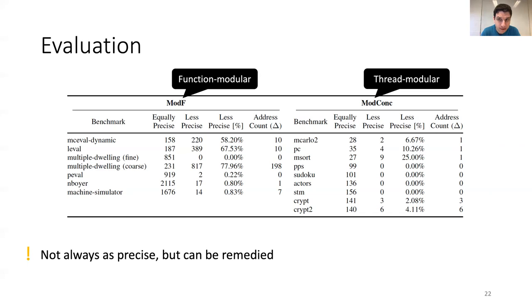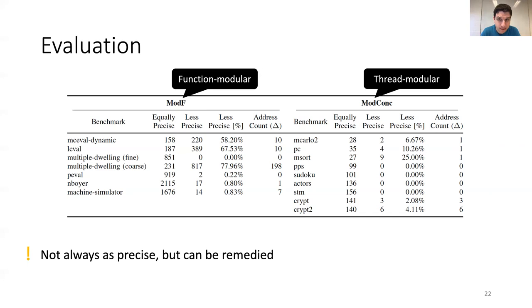To finish this presentation, I have come up with two questions. First, I wonder how much variance is acceptable for the reduction of the analysis time. As you can see, the reductions we find are in a quite big interval, so is this acceptable or not? And second, what is the best way for us to obtain changes that we can use for the evaluation of our analysis? For example, would the audience be willing to accept the installation of the change logger in their IDE that can record their changes? And on this note, I finish my presentation. Thank you all for listening.